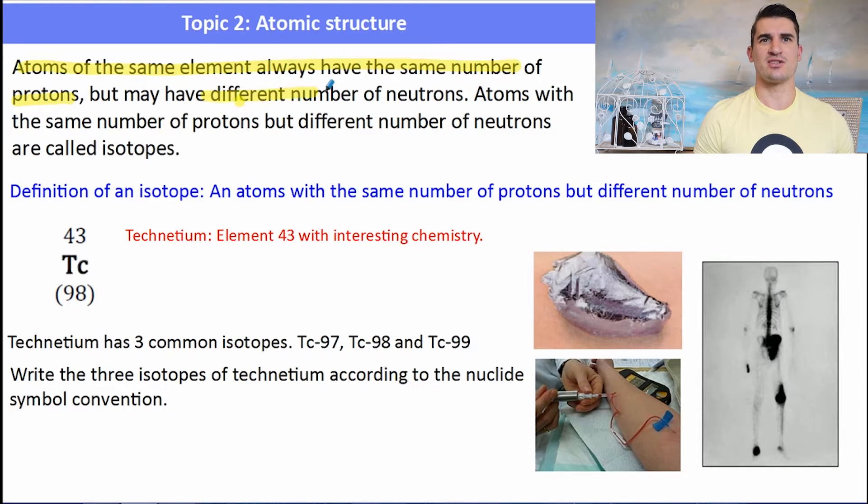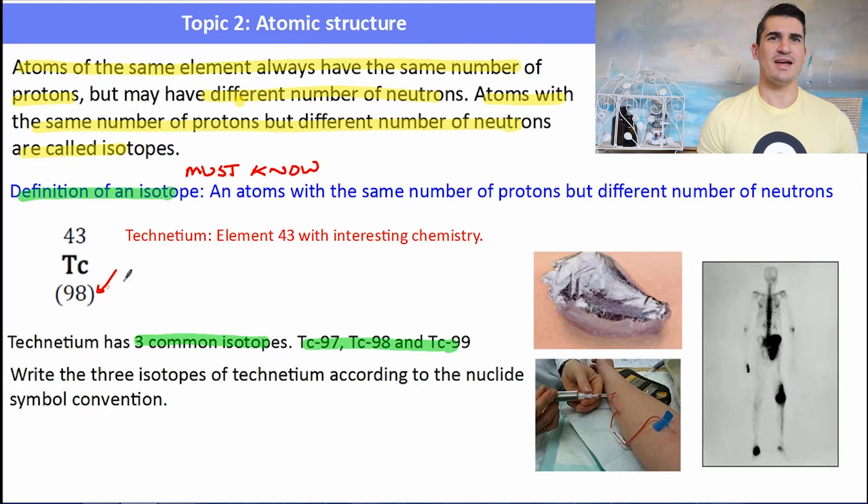Now let's get on to discussing isotopes. Isotopes are the exact same element, so same number of protons, but a different number of neutrons. The definition of an isotope is one you need to remember: an atom with the same number of protons but a different number of neutrons. For example, technetium, which is element number 43, has some interesting chemistry. It is used a lot in medicine because it is a radioactive tracer. We can inject that into a person's body and then scan for it. It's used in a lot of medical imaging. Technetium has 3 isotopes: 97, 98 and 99.